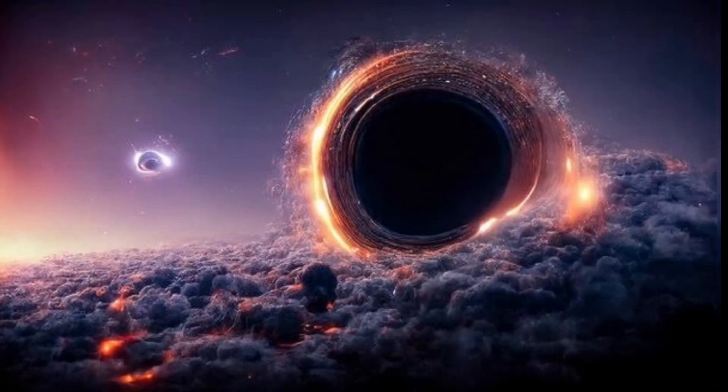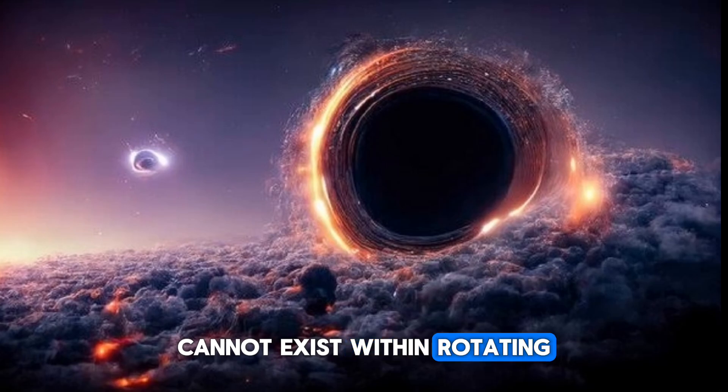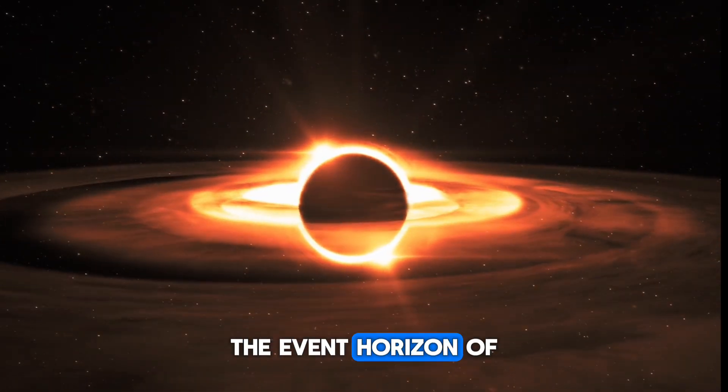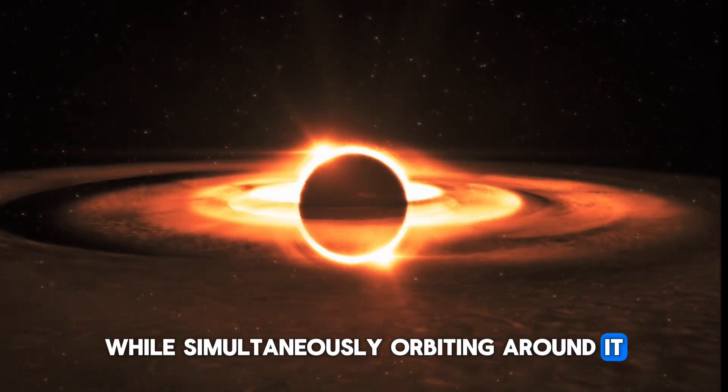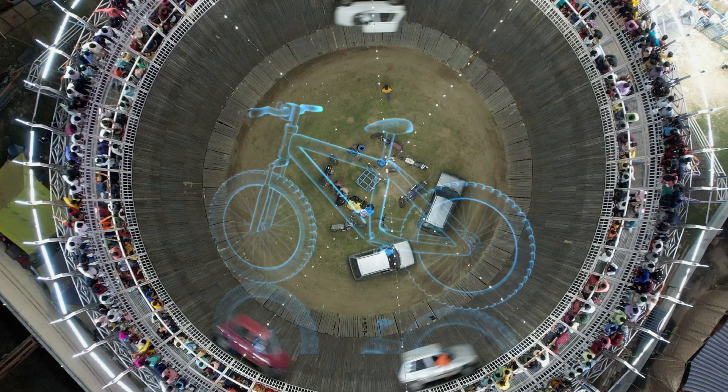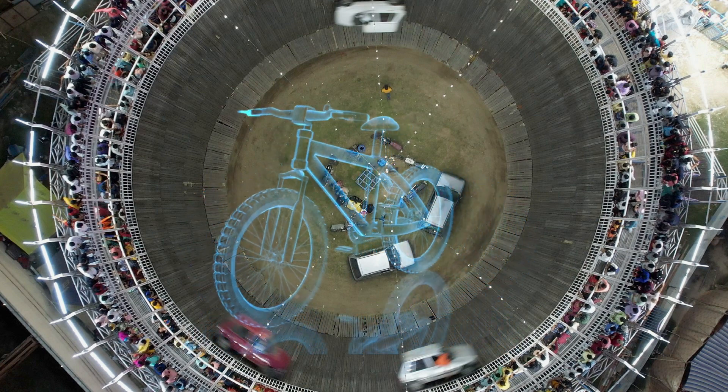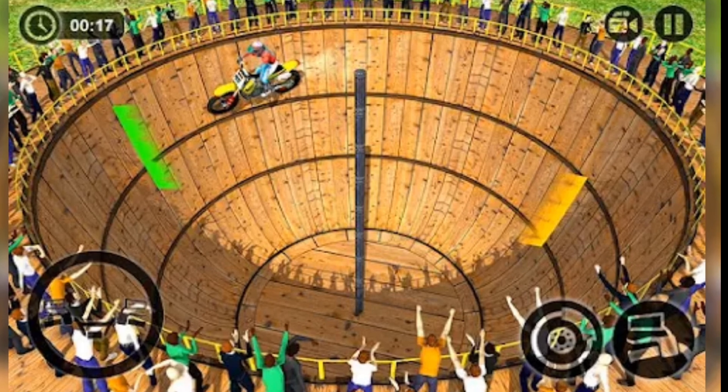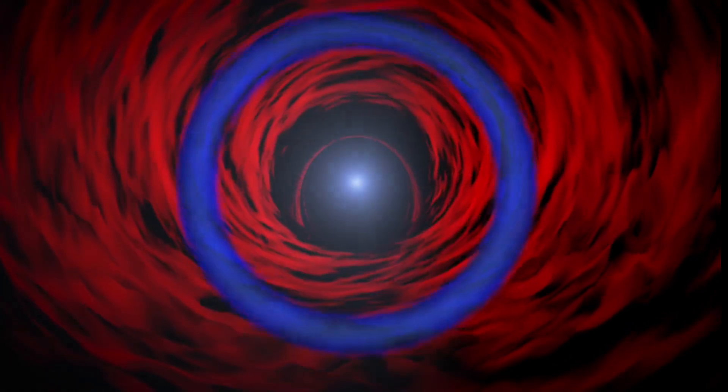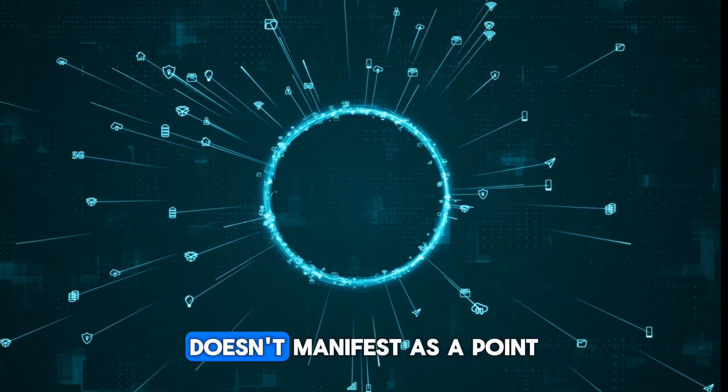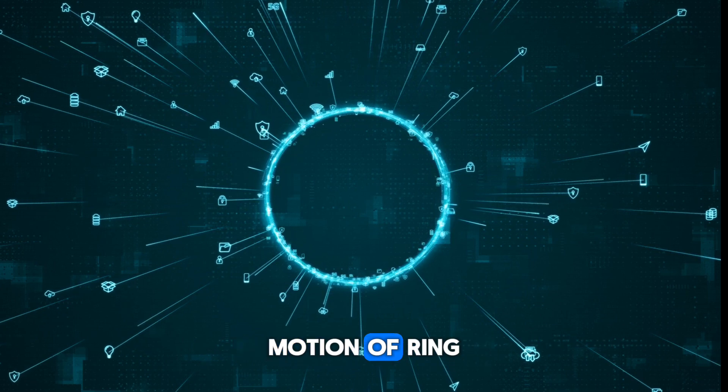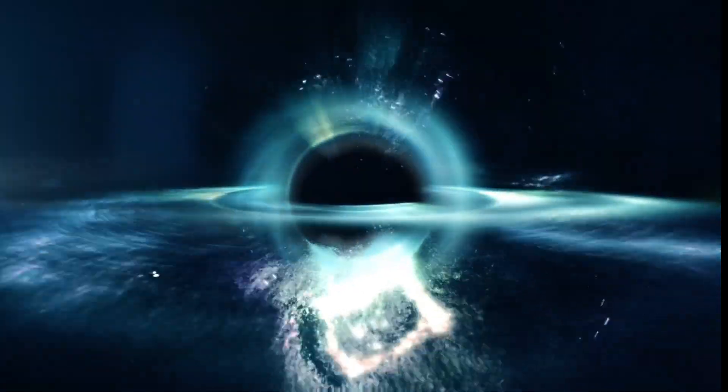Now that we understand how singularities are formed in black holes, it's evident that black holes are not stationary—they rotate. Consequently, point singularities cannot exist within rotating black holes. When objects cross the event horizon of a rotating black hole, they are drawn towards the center while simultaneously orbiting around it. This motion resembles the bikes in a well of death. The mass within a rotating black hole doesn't concentrate at a central point but rather in the motion of a ring.